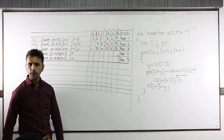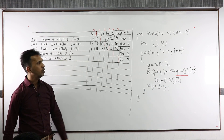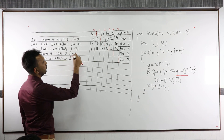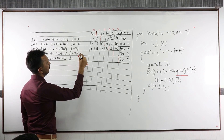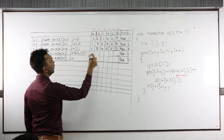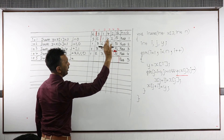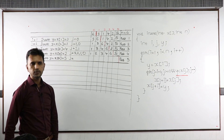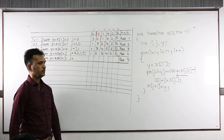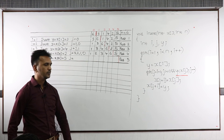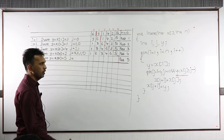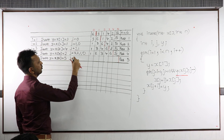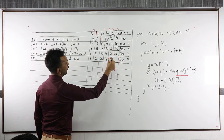In pass 4, y is 2. Is 2 less than 6? True. Is 2 less than 4? True. Is 2 less than 3? True. Is 2 less than 1? False. J equals 3, 2, 1, 0. Array: 1, 2, 3, 4, 6, 5. In pass 5, y is 5. Is 5 less than 6? True. Is 5 less than 4? False. J equals 4 and 3. Array: 1, 2, 3, 4, 5, 6. That completes the entire working.